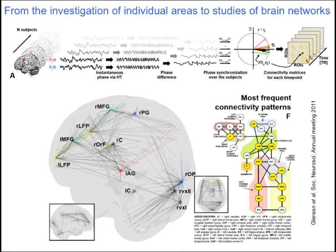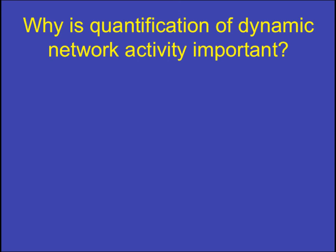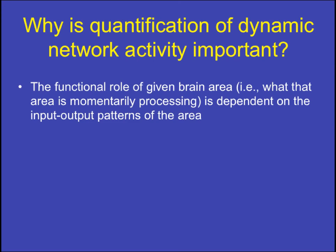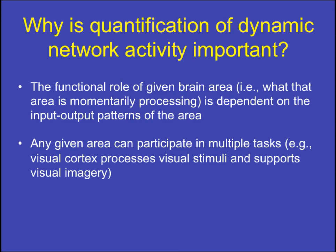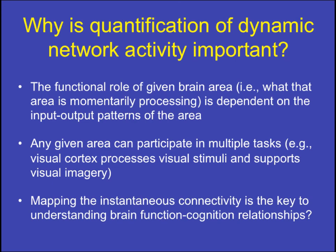These dynamic network analyses were presented at the Society for Neuroscience meeting in 2011 and are work in progress. Quantification of dynamic network activity is important because the functional role of a given brain area depends on its input-output patterns. For example, the visual cortex processes visual stimuli but also supports visual imagery — whether driven by bottom-up or top-down stimulation, the same brain area can carry out different tasks. Mapping instantaneous connectivity may be the key to understanding brain function-cognition relationships.